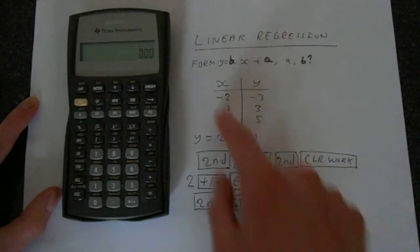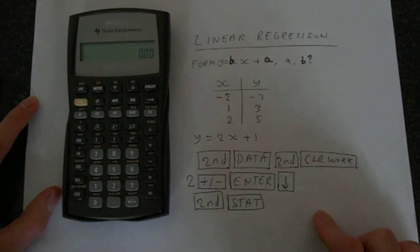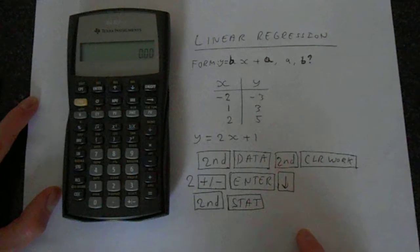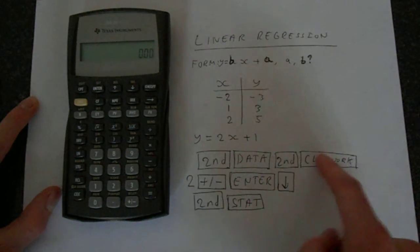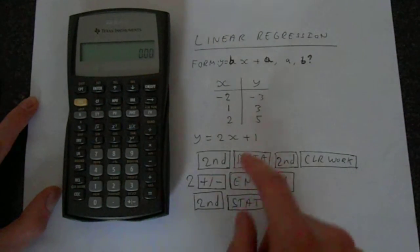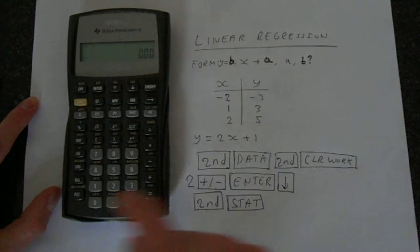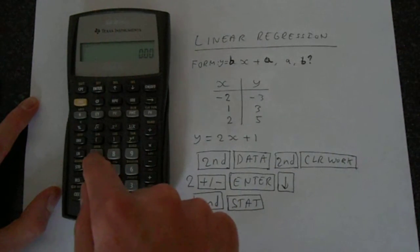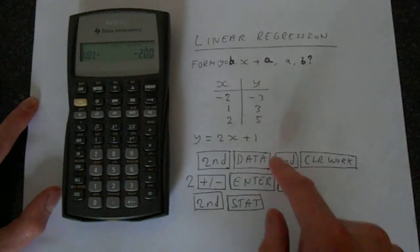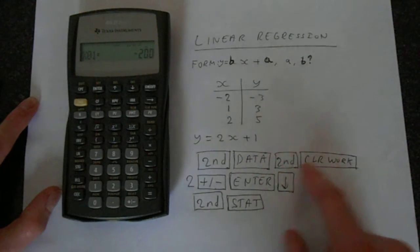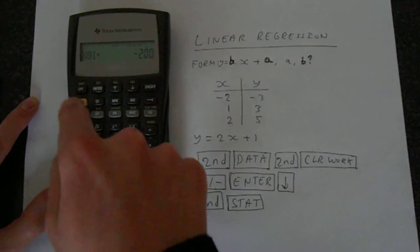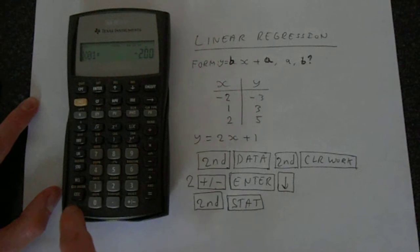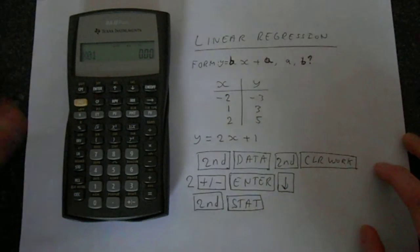Let's start by entering this into the calculator. It's the first step in the calculation, but you have to make sure that the workbook is cleared. Press second, then go to data which is on number 7. Then do second function clear work—second function in the bottom left hand corner, you've got clear work, and that clears what we've previously entered.